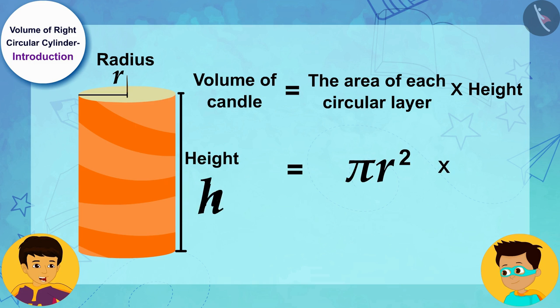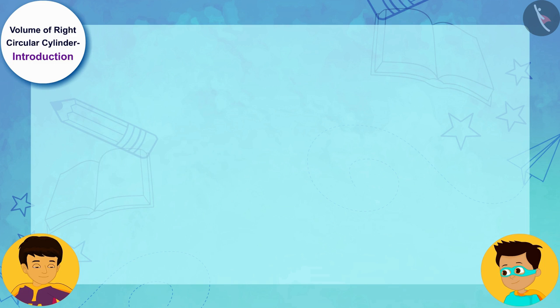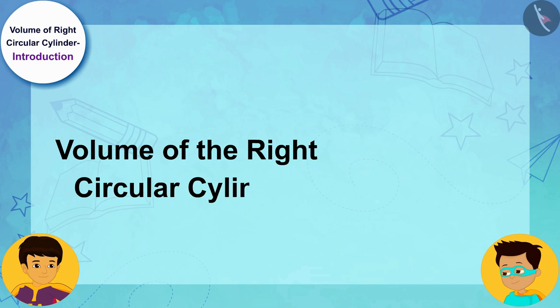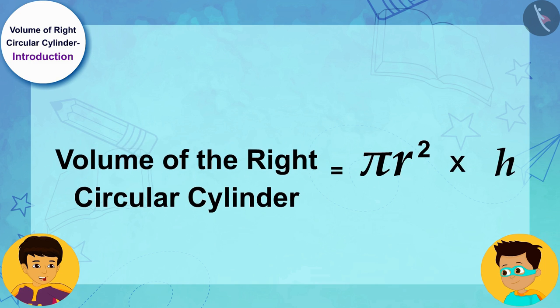The area of each layer is πr², and the height of the candle is h. Therefore, we can say that the volume of the right circular cylinder is equal to πr²h, where r is the radius of the base and h is the height of the right circular cylinder.